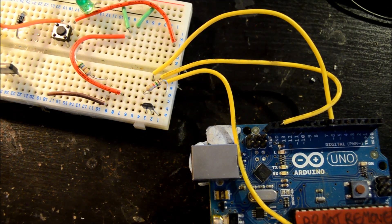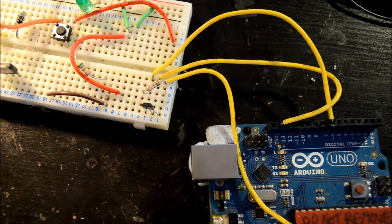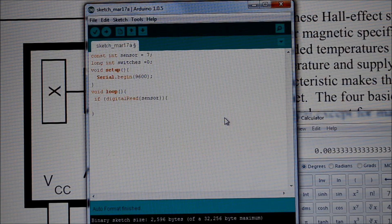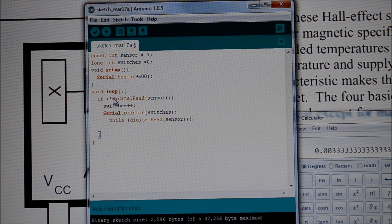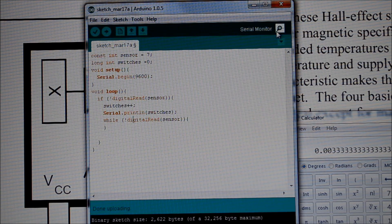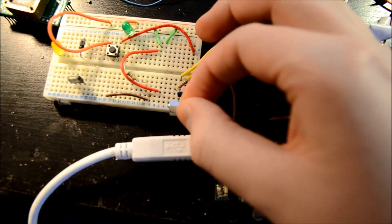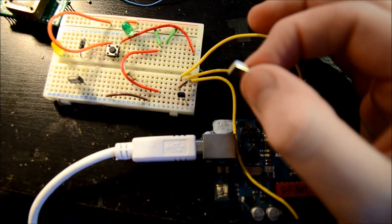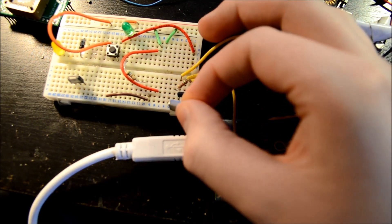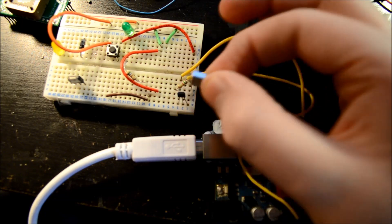I have connected the Arduino back up. Now, every time the magnet goes near and goes away, one is added to a counter.